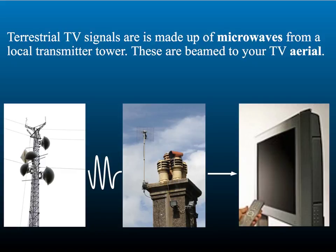If you don't have cable TV at home then the pictures you receive are all beamed through the air. The TV signal might consist of microwaves sent from your local transmitter. This is called the terrestrial TV signal. These waves travel at the speed of light through the air and are received by your TV aerial.